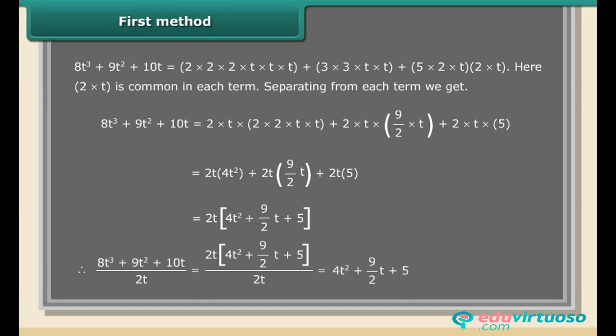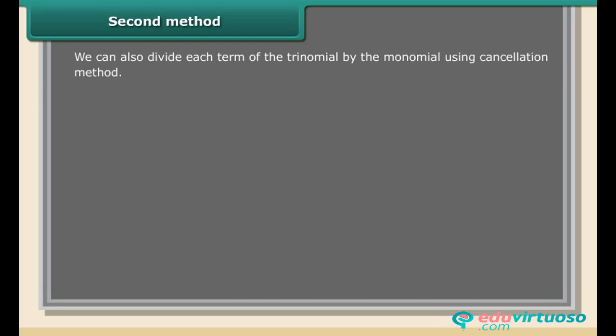Second method: we can also divide each term of the trinomial by the monomial using the cancellation method. (8t³ + 9t² + 10t) ÷ 2t = 8t³/(2t) + 9t²/(2t) + 10t/(2t) = 4t² + (9/2)t + 5.